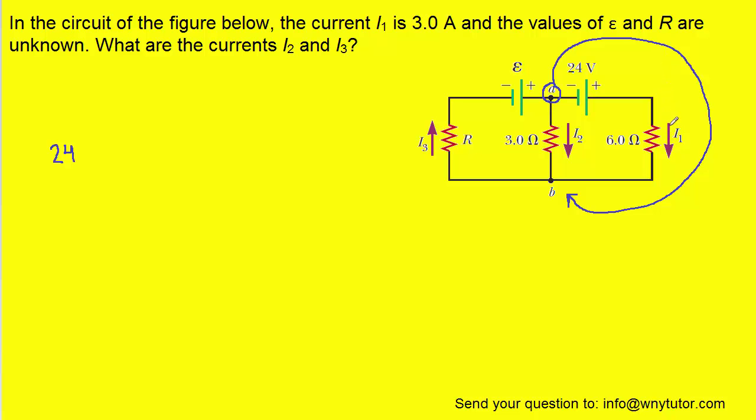We then continue our way along the path, and we would be moving with the current marked with I1. Whenever we move with current, that represents a negative potential change. Furthermore, when we go through a resistor, the potential change is equal to the current times the resistance. We can see the current is marked as I1, and then we would multiply it by the resistance of 6 ohms. And then we would continue our journey and end at point B.